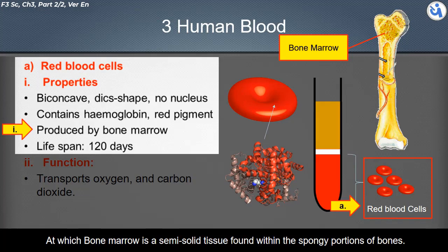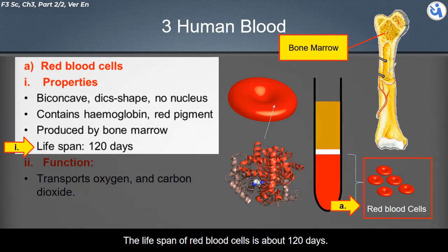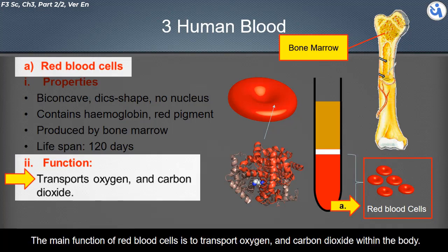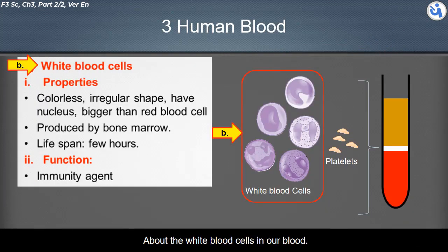Hemoglobin is produced by bone marrow, which is a semi-solid tissue found within the spongy portions of bones. The lifespan of red blood cells is about 120 days. The main function of red blood cells is to transport oxygen and carbon dioxide within the body.